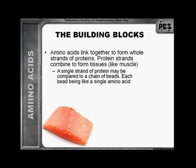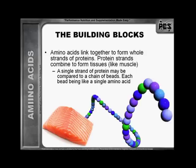Amino acids link together to form whole strands of proteins. Protein strands combine to form tissues, like muscle. A single strand of protein may be compared to a chain of beads, each bead being like a single amino acid.